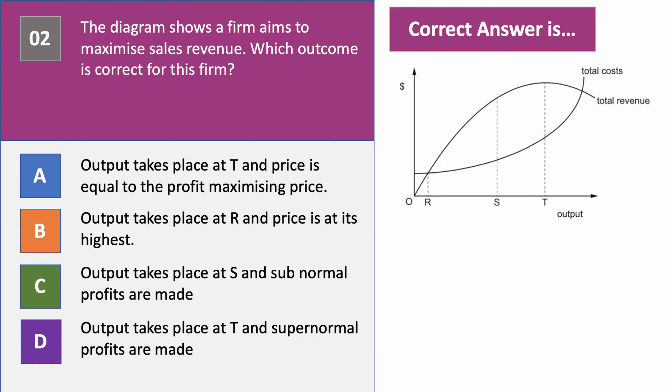Question two: the diagram shows a firm that aims to maximize their sales revenue. The question is: which outcome is correct for this firm? Options A, B, C, and D are available. Have a go — press the pause button, then press play when you want to check your answer. Total revenue rises initially then falls; total cost increases at an increasing rate.